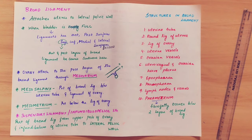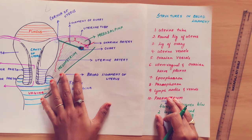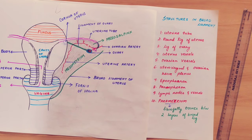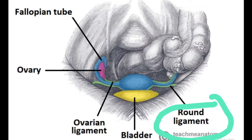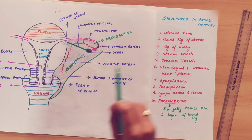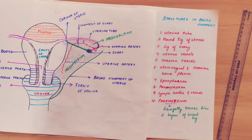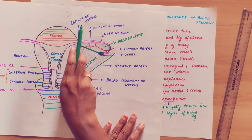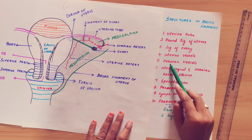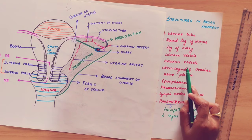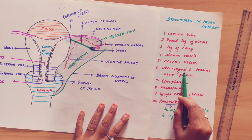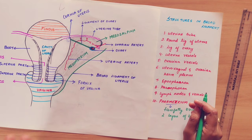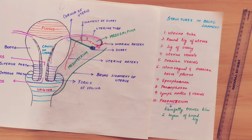Now, the structures present within the broad ligament include: first, the uterine tube (fallopian tube); second, the round ligament of the uterus, which lies between the two layers of the broad ligament; and third, the uterine and ovarian vessels, which are also present within the broad ligament.